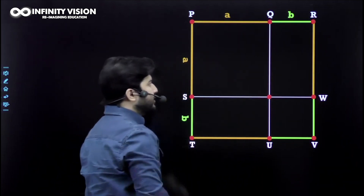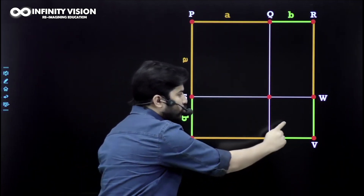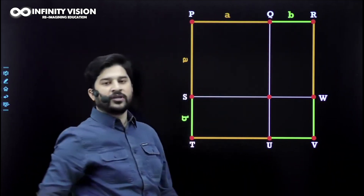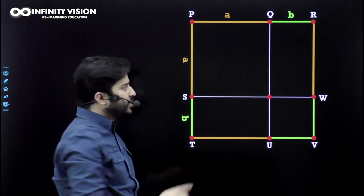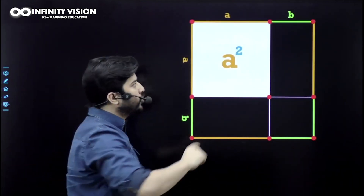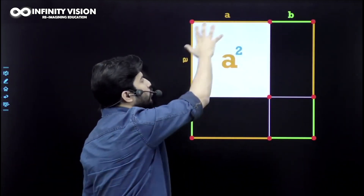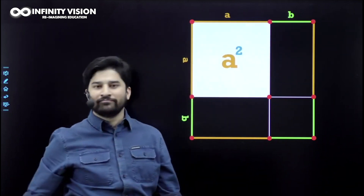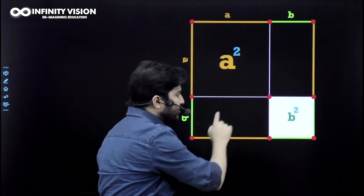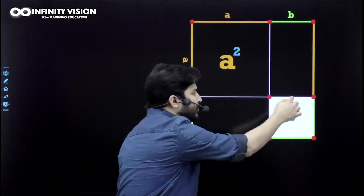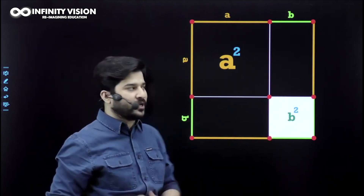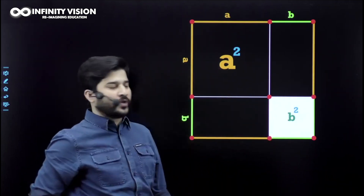You have one big square with side a by a — its area is a squared. You have a smaller square with side b by b — its area is b squared. So the area of the big square is a² and the area of the small square is b².